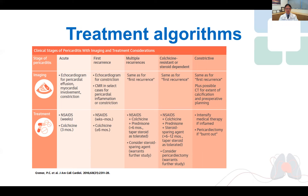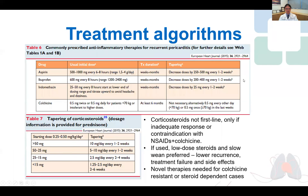When there are multiple recurrences or colchicine resistance, steroids are typically added for six to 12 months before weaning. And in the late constrictive phase, we might consider further third-line options as well as pericardiectomy.